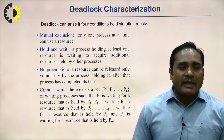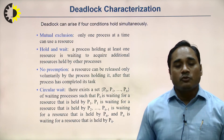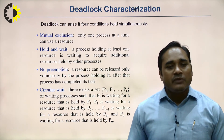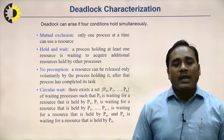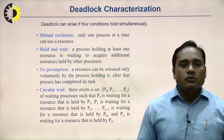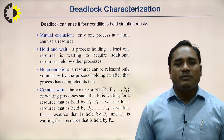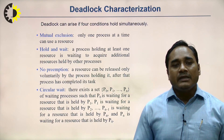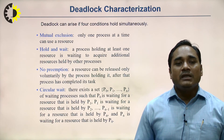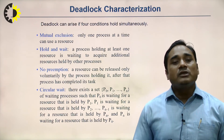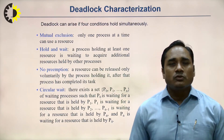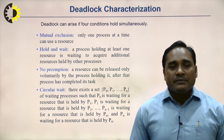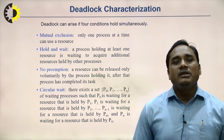The fourth condition is circular wait: there exists a set of processes P0, P1, up to Pn such that P0 is waiting for a resource held by P1, P1 is waiting for a resource held by P2, and so on, with Pn waiting for a resource held by P0. This creates a cycle. If all four conditions — mutual exclusion, hold and wait, no preemption, and circular wait — occur simultaneously, the system enters deadlock.